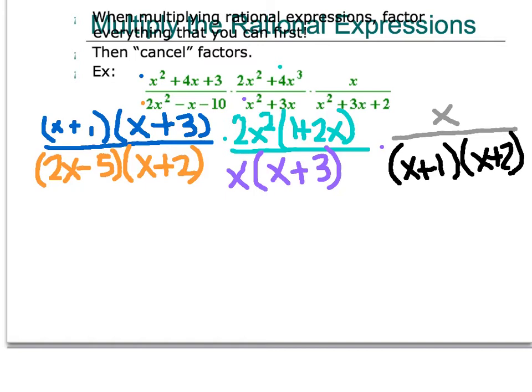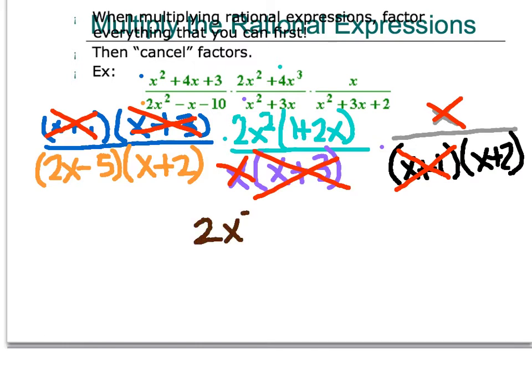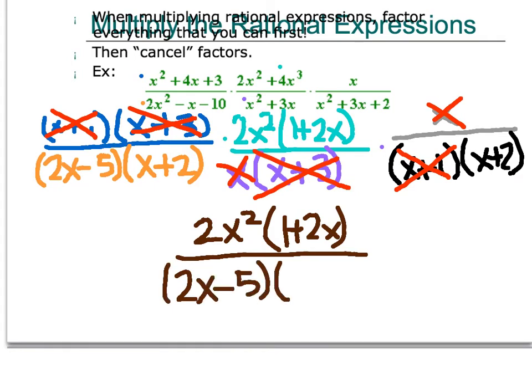Okay, so looking at our numerator and denominator, we're trying to find some matches. And I notice in my numerator, I have an x plus 1, and I also have one in my denominator that I can get rid of. In my numerator, I have an x plus 3 that I can get rid of, because I have one in my denominator. And then I also have an x. And so, the factored form of this whole huge thing that we started with is going to be 2x squared times the quantity of 1 plus 2x all over 2x minus 5 times the quantity of x plus 2.